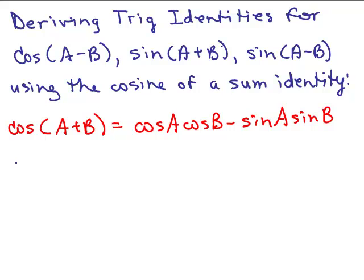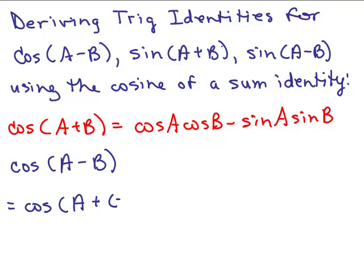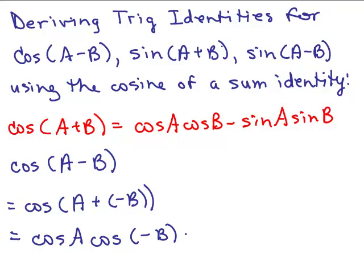Let's start off with the cosine of a minus b. What we want to do is think of that as the cosine of a plus a negative b. That way, I can use the cos(a+b) formula, but plug in negative b in place of b. So I'll have the cosine of a times cosine of negative b, minus the sine of a times sine of negative b.